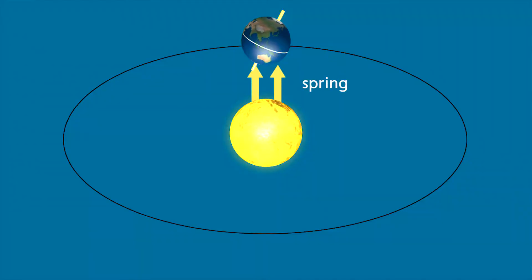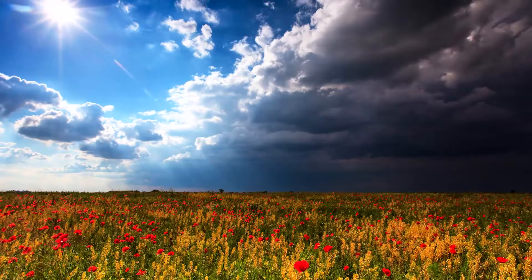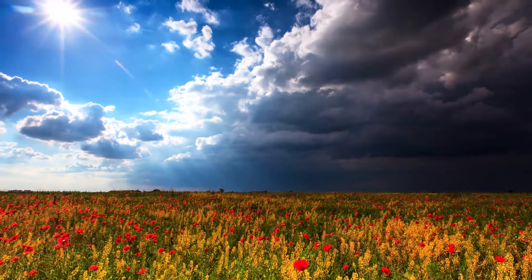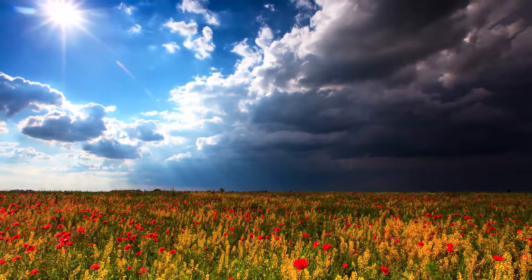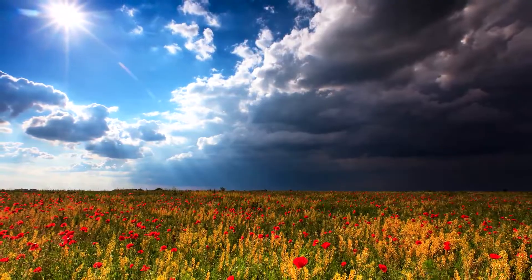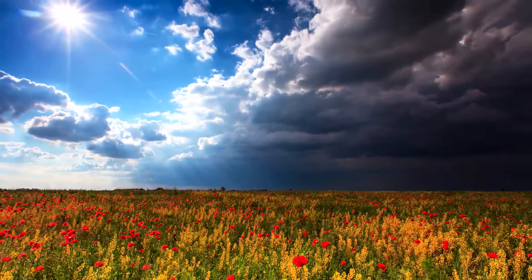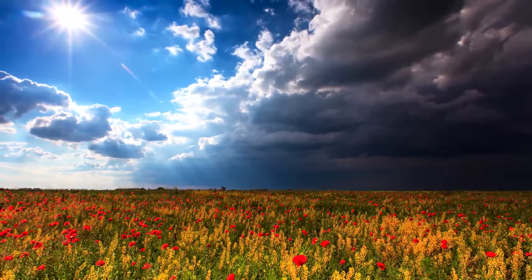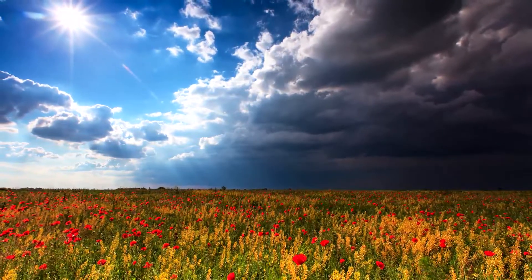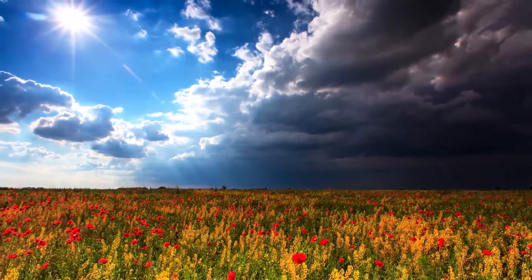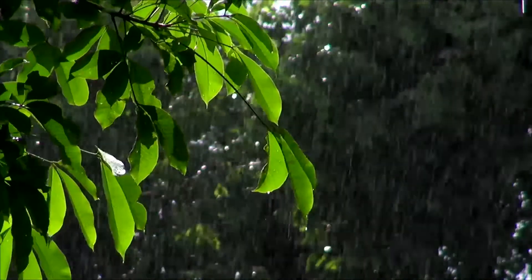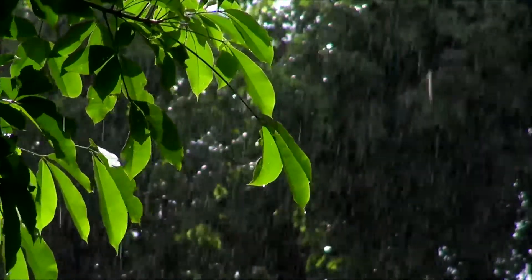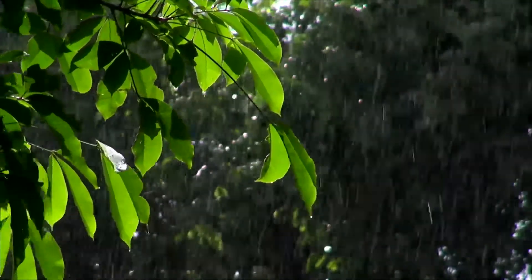Spring is the time of year that Earth is beginning to tilt toward the sun. In the spring, there are more hours of daylight than in the winter. There is more sunlight in the spring, so the weather feels warm. Some places have a lot of rain in the spring.